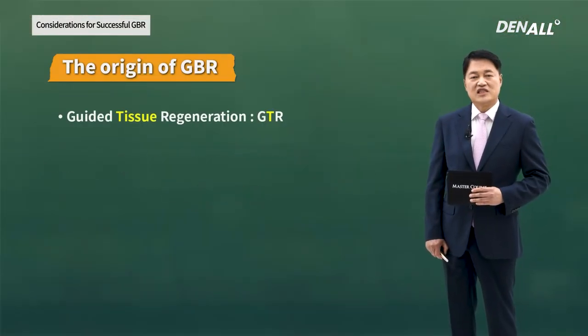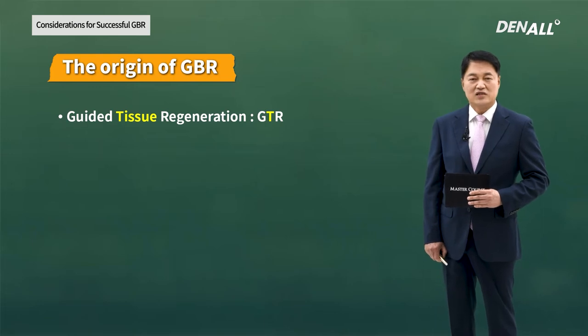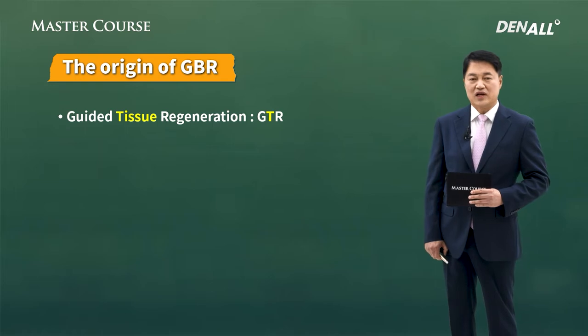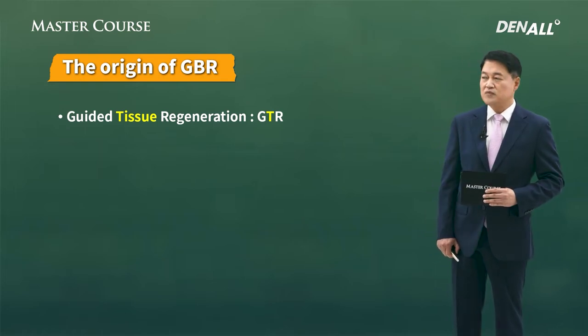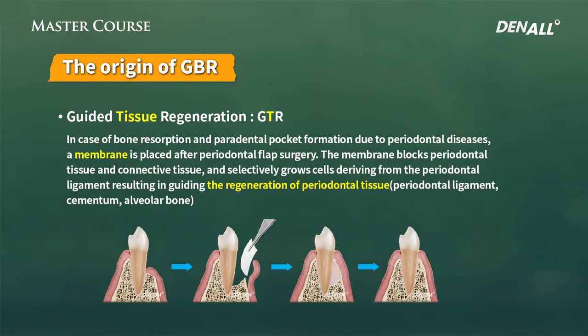The basics of GBR — it started off with GTR, guided tissue regeneration. Due to periodontal disease, bone resorption and periodontal pockets can be formed. After a curative membrane is used to block connective tissue and epithelial tissue and selectively grow cells deriving from the periodontal ligament, this results in the regeneration of periodontal tissue, periodontal ligament, cementum, and alveolar bone.